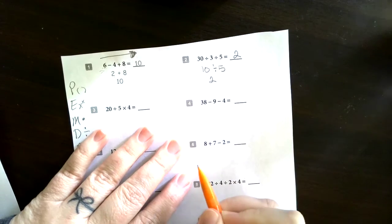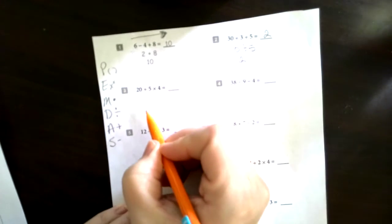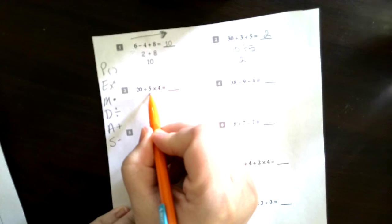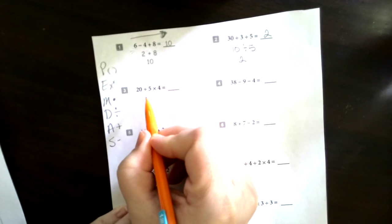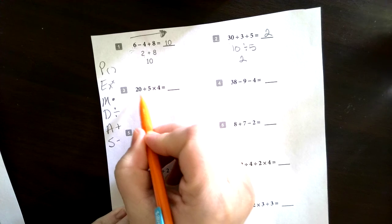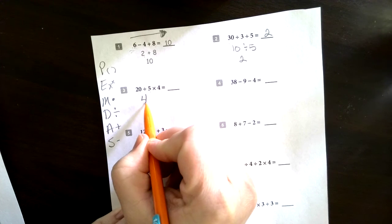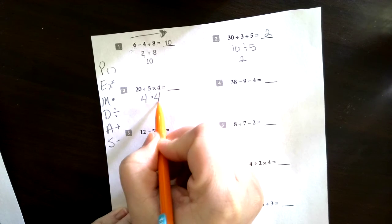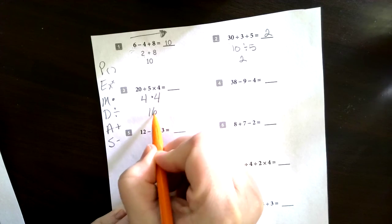The next problem is 20 divided by 5 times 4. So for this one we're going to do 20 divided by 5, gives us 4, and then we multiply that by 4, which gives us 16 as the answer.